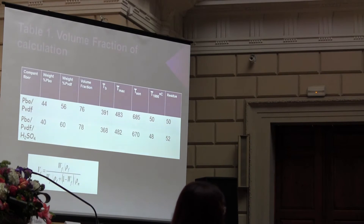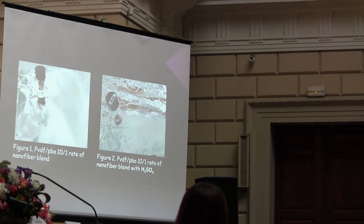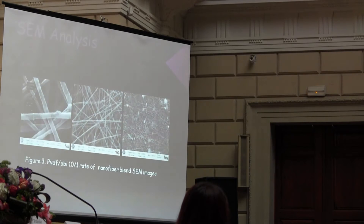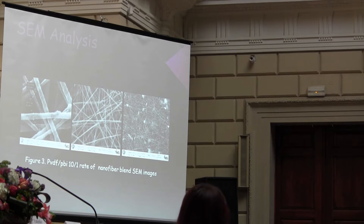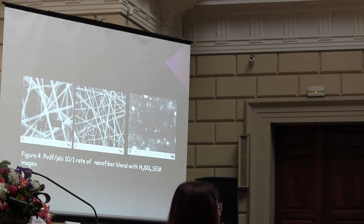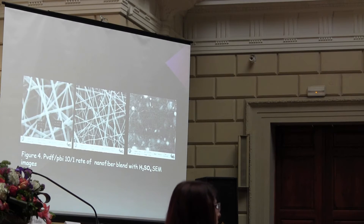We calculated volume and pressure from the thermal gravimetric analysis. You can see in this picture the first solution without acid — how it looks on top of the aluminum foil — and the second one with acid, how it looks. You can see from the analysis: the first solution shows a nanofiber diameter range of about 90 to 150 nanometers, and the second picture shows continuous nanofibers. The second solution shows nanofibers in a range of about 90 nanometers, but the second image shows some breaks in the nanofibers.